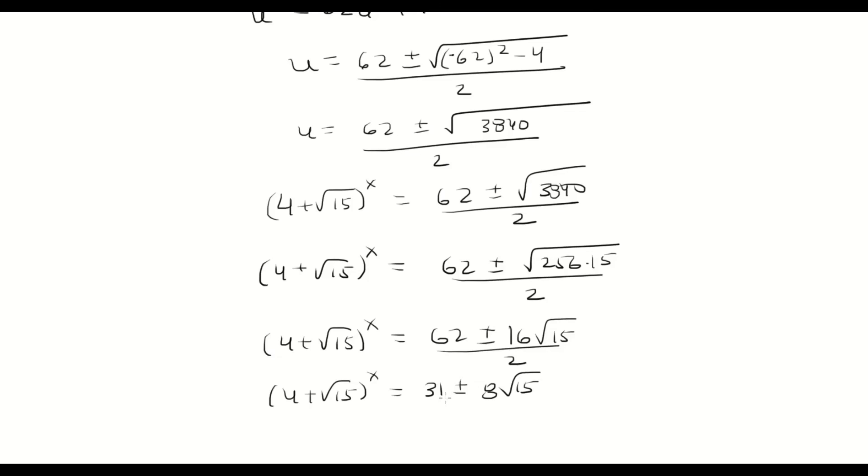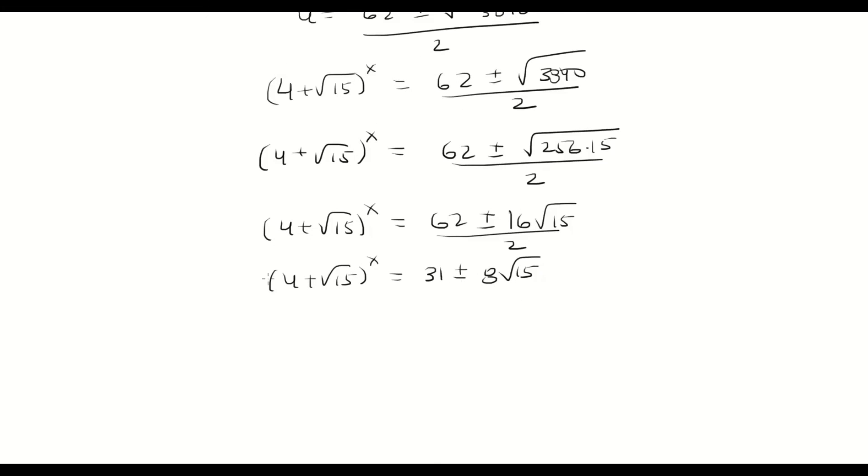And so to solve for x we're going to take the log of both sides. x comes out in front, and then we'll just divide by natural log of (4 + √15).